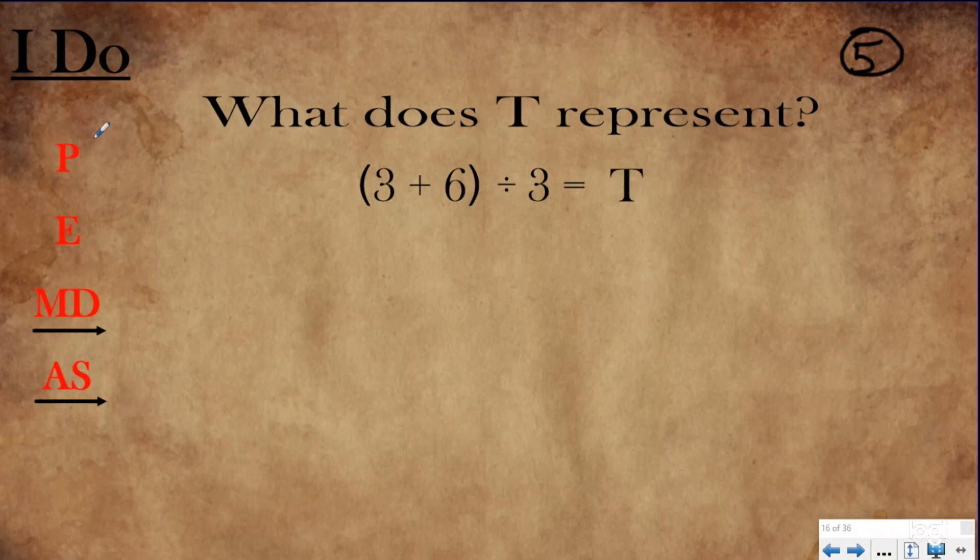When we're going through our steps, we can't cross out the parentheses yet because we haven't solved them. So we need to group what's inside the parentheses together. So three plus six is nine. Then I rewrite this, equals T. And now I've solved my parentheses. I don't have any exponents. I do have division, and I only have one operation left. So now I'm doing nine divided by three, which equaled three. So I'm going to say that three equals T.